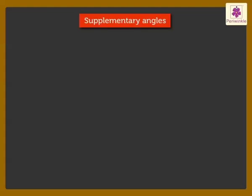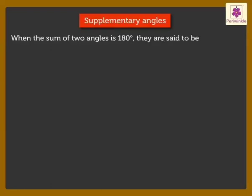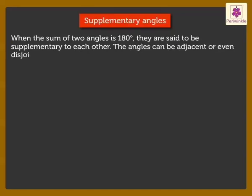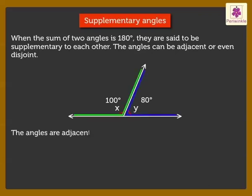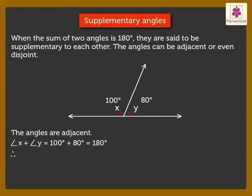Lastly, supplementary angles: when the sum of two angles is 180 degrees, they are said to be supplementary to each other. The angles can be adjacent or even disjoint. Look at figure 1 — here, the angles are adjacent. Angle X is equal to 100 degrees and Angle Y is equal to 80 degrees. On adding their measures, we get 180 degrees. Hence, Angles X and Y are supplementary angles.